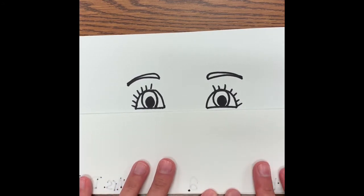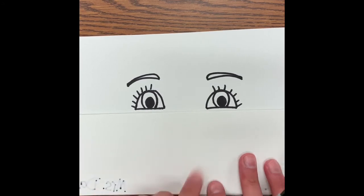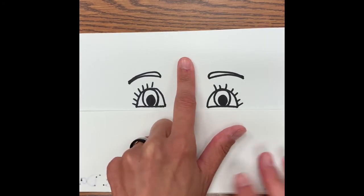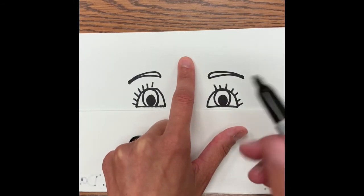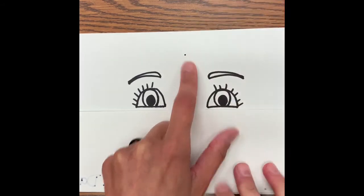After we draw our eyes and our eyebrows, we're going to find again the center part in between our eyes, more towards the top though. This is going to be where our hairline is going to be. I'm going to put a little dot right there.